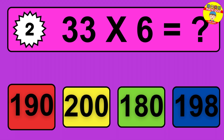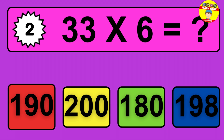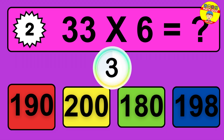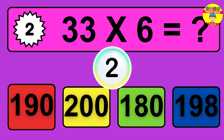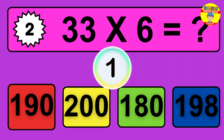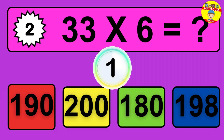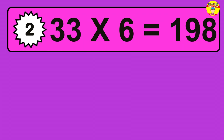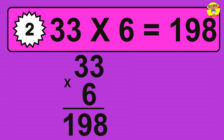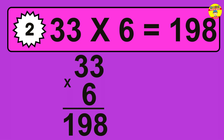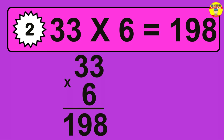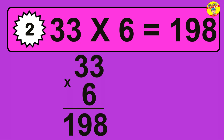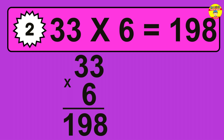Question 2. 33 times 6 equals what? The answer is 33 times 6 is 198. To calculate, we have 33 groups with 6 balls each one. So, how many balls do we have?